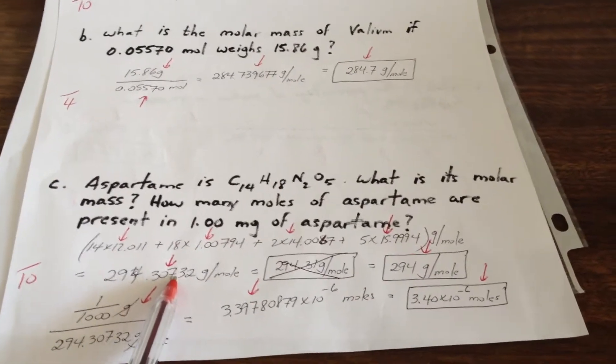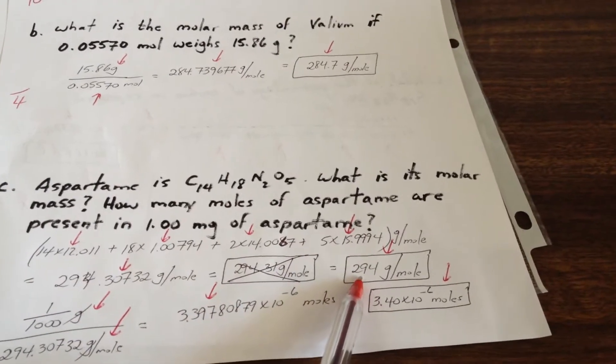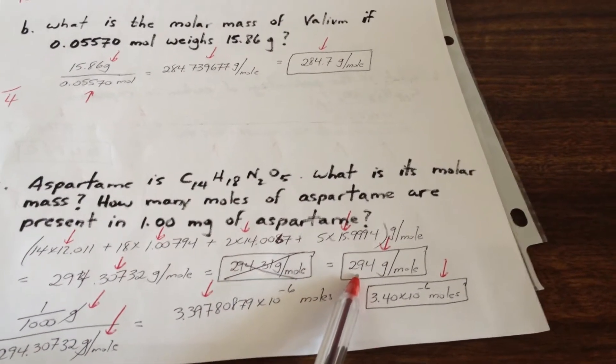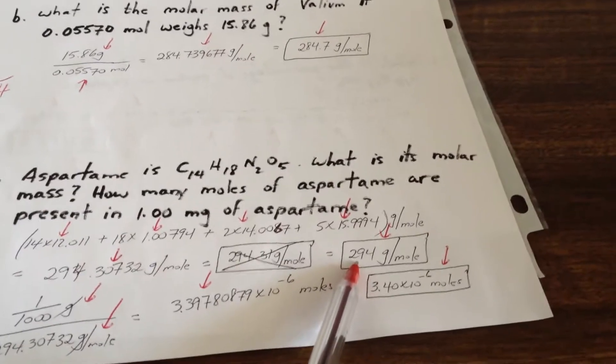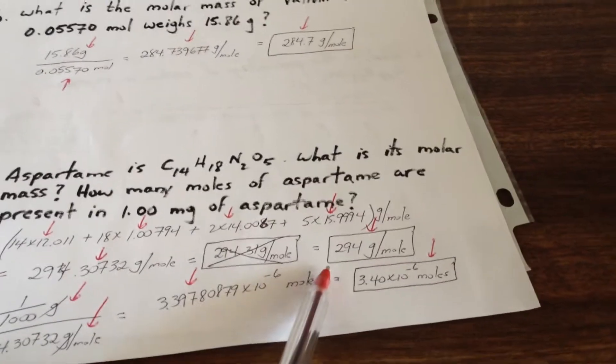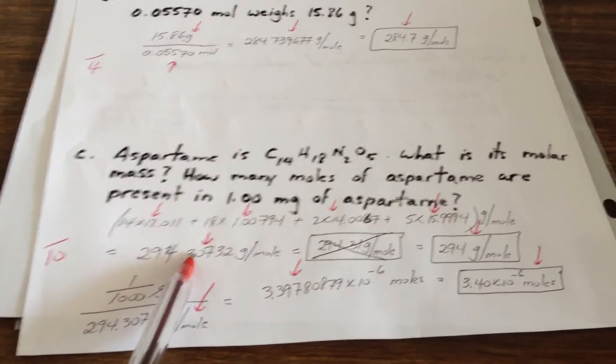Notice I don't do any rounding until the very end of the question. That's how we report the answer. But I don't use this part of the answer to continue my calculation. I go back to using the full set of decimals.